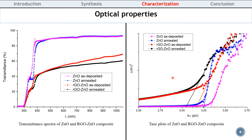The optical band gap of ZNO and RGO ZNO composite was determined using the Tauc model, and it was found that the optical band gap decreased with the annealing treatment and in the presence of RGO. This indicates that the RGO ZNO composite exhibits much higher photoabsorption performance compared to ZNO.